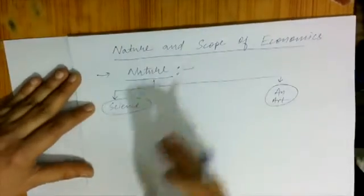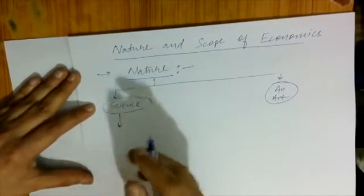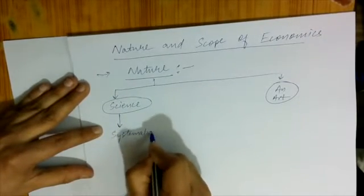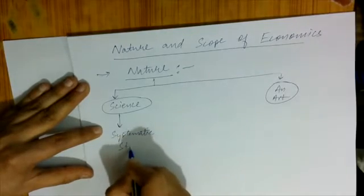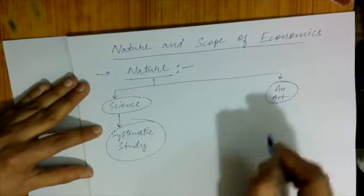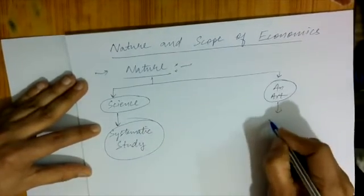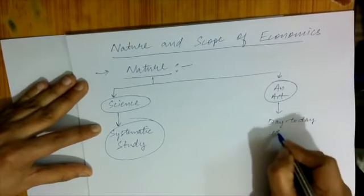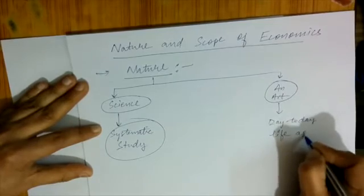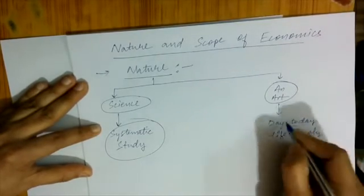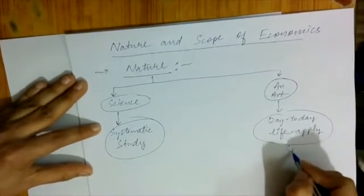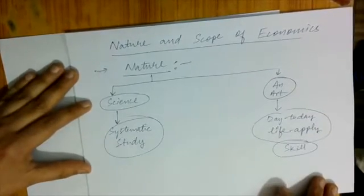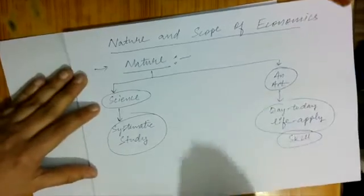If you can handle any subject systematically, we can call it a science. Art is why? Because Economics is applied in our day-to-day life. It is a skill also — like for a vegetable seller, calculating total revenue, cost, and profit. That is a skill, and it is also an art.